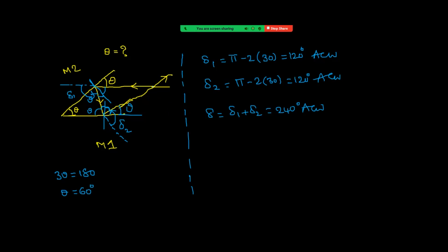From the diagram we can verify: the angle between the incident ray and final reflected ray shows a deviation. The angle between the mirrors is 60°, and the remaining angle is 120°, so the deviation is 360° − 120° = 240° anticlockwise, confirming our result of δ1 + δ2 = 240°.